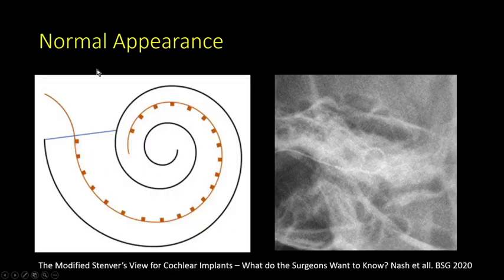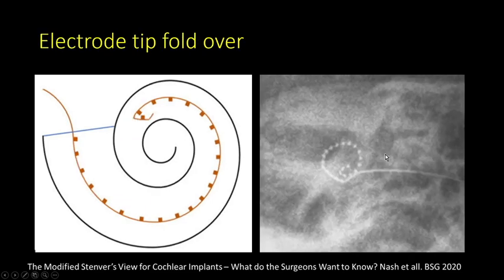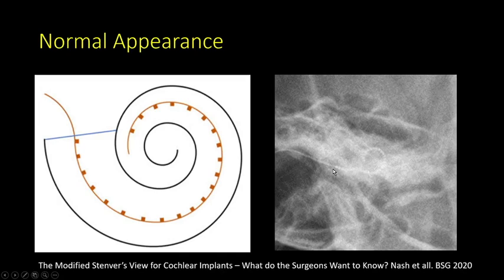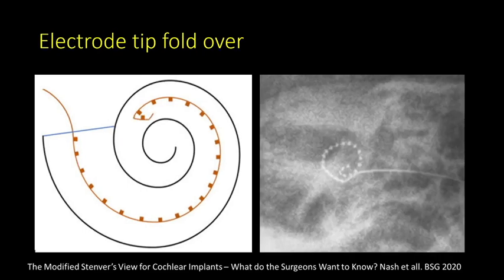On x-ray graphics from Nash et al. 2020, the cochlear electrode is shown in orange and the cochleostomy site in blue, with normal appearance showing approximately 270 degrees of coiling within the cochlea. It is important to measure and report the number of electrodes within and outside the cochlea. A complication example shows the tip folded over on itself — something the surgeon often suspects intraoperatively due to increased resistance during electrode insertion.